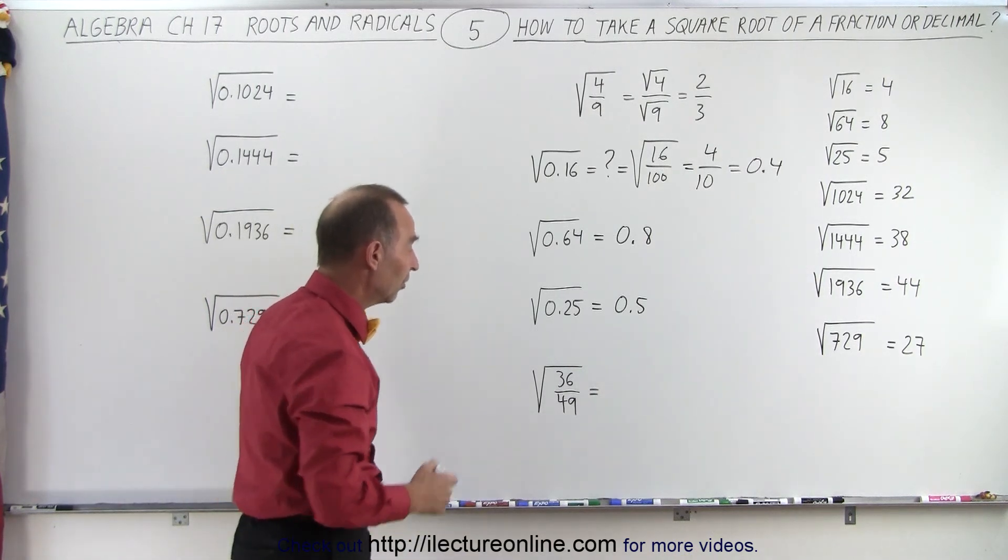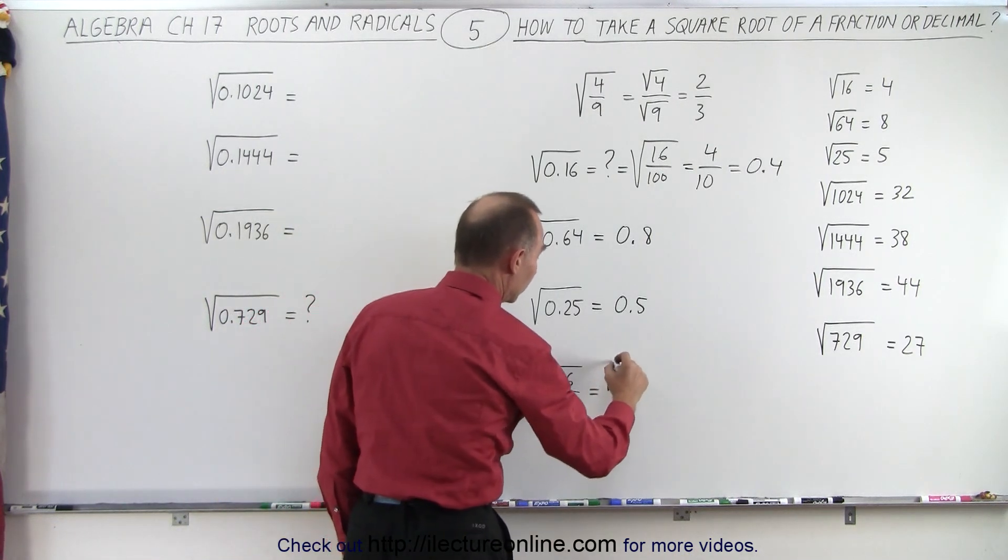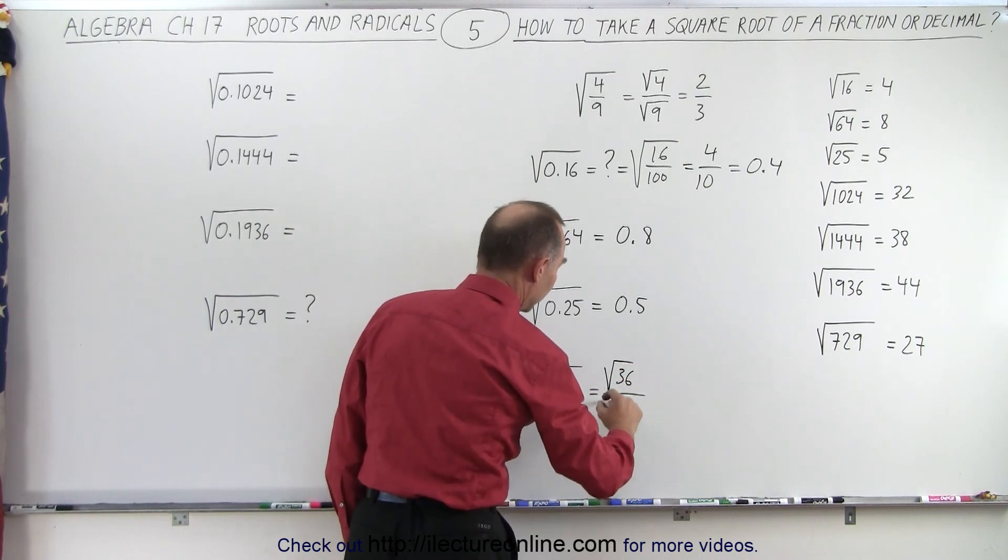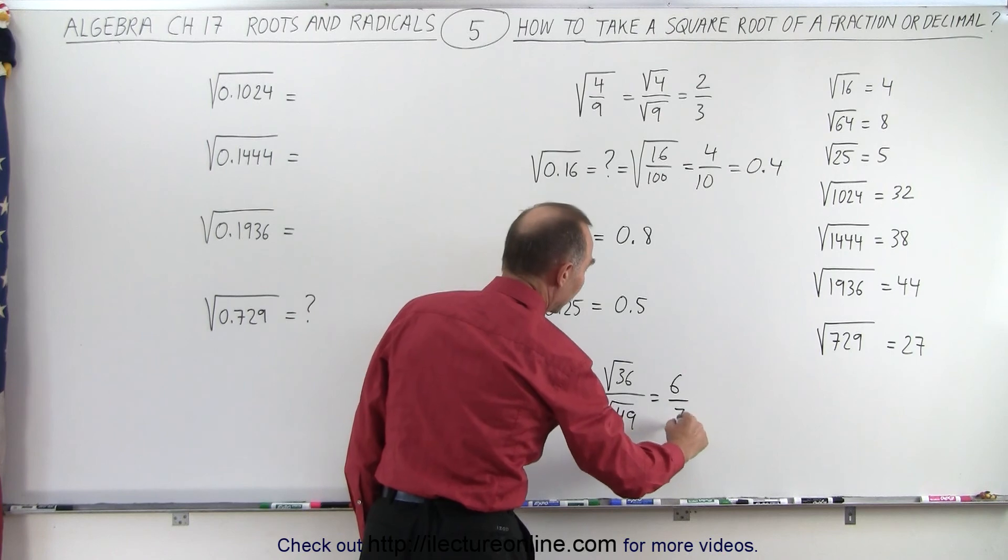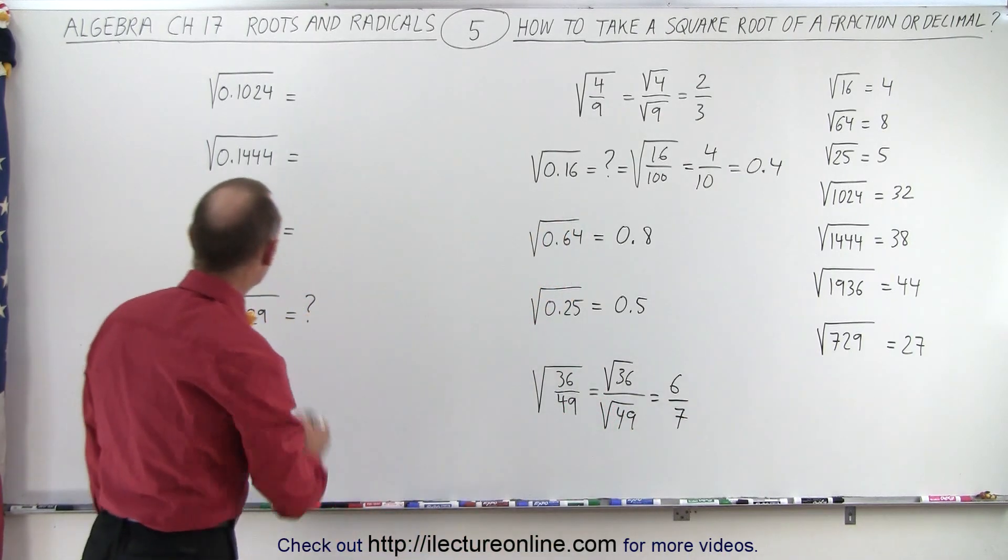Or, if you want to take the square root of this, you can say, well, that's equal to the square root of 36 divided by the square root of 49, which is equal to 6 divided by 7. Does it work for numbers like this?